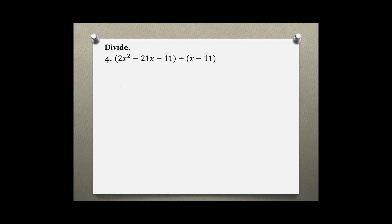So let's rewrite the problem by starting with the divisor which is x minus 11, and then under the fraction bar we write the dividend which is 2x squared minus 21x minus 11.